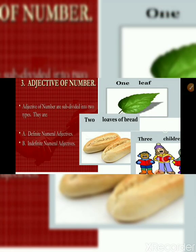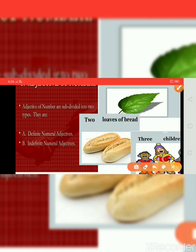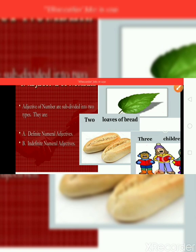Next, adjective of number — very easy. Adjectives of number are subdivided into two types: words which show the number about a noun. They are adjectives of number. Definite numeral adjective, and indefinite numeral adjective — indefinite means several, all. These are the adjectives of number indefinite. But definite numbers you know: one, two, three. For example: three pictures I have shown you. One leaf. Two loaves of bread. Three children are playing. These are examples of adjective of number.